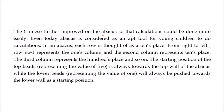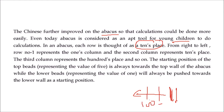The Chinese further improved this abacus, and even today young children use it for calculation. Each row is thought of as a place value — row 1 represents the ones column, the 2nd column the tens place, the 3rd the hundreds place and so on. The top beads represent a value of 5 and are always towards the top wall, while the lower beads representing 1 are pushed towards the lower wall at starting position.